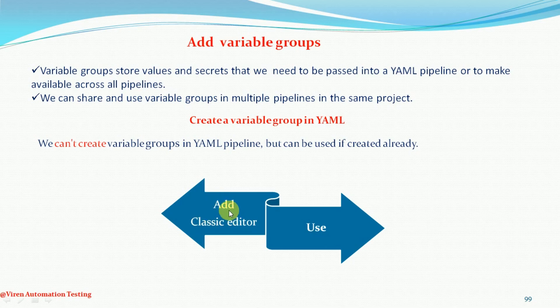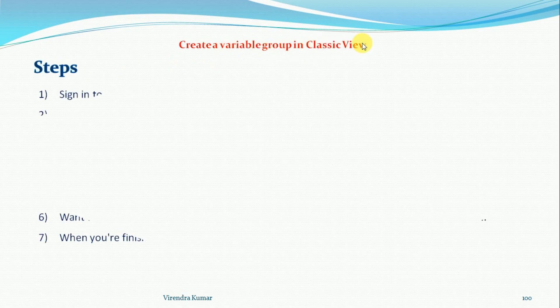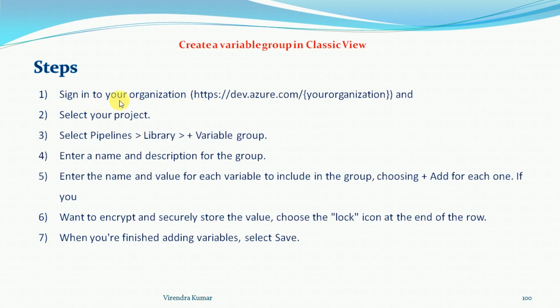First we will add the variable group through the classic editor or through the UI, and then we will use it in the pipelines. What are the steps to create a variable group in the classic view? For that, you need to sign in to your organization — that is the URL you can sign in to, which you already know.